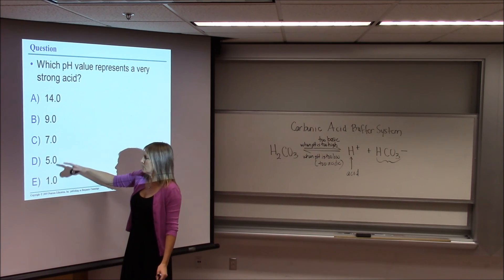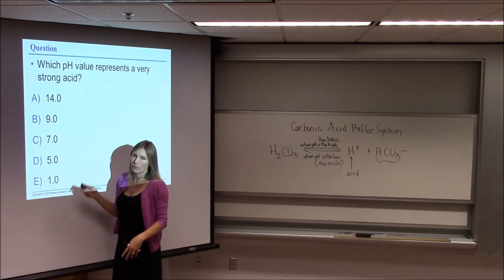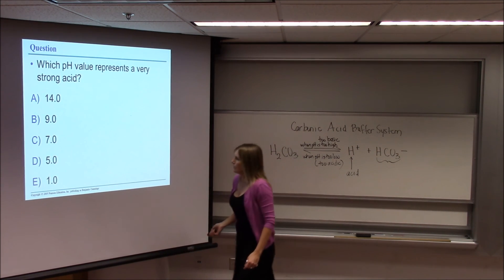7 would be neutral. 5 would be a somewhat weak acid. 9 would be a relatively weak base, relative to 14.